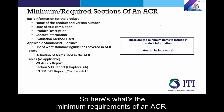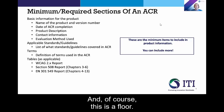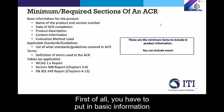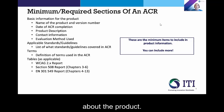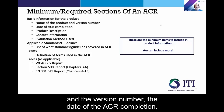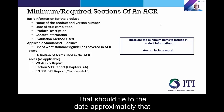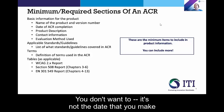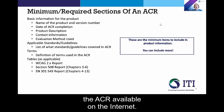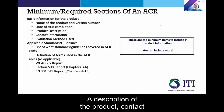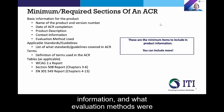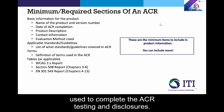So here's what the minimum requirements of an ACR are. And of course, this is a floor — you can always do more than this. First of all, you have to put in basic information about the product. That's going to include things like the product and the version number, the date of the ACR completion — that should tie to the date approximately that the testing was done, not the date that you make the ACR available on the internet. A description of the product, contact information, and what evaluation methods were used to complete the ACR testing and disclosures.